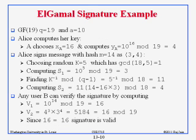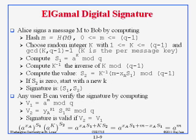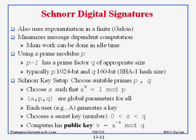The main problem with the El-Gamal method is that you have to do a lot of calculation right when you're sending the message. Schnorr fixed this so that most of the work can be done beforehand, and when you're sending the message, less work is required. That's the main difference; everything else is still the same as before.